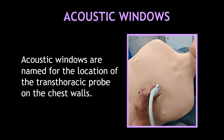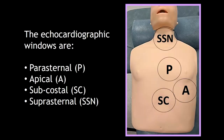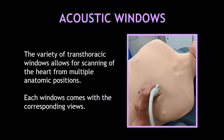What is an acoustic window? A window is the place where we put the probe on the patient. Acoustic windows are named for the location of the probe on the chest walls. The echocardiographic windows are parasternal, apical, subcostal, and suprasternal. These windows allow us to see the heart from multiple anatomic positions.